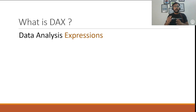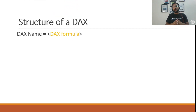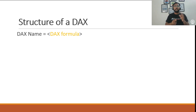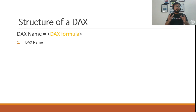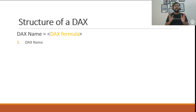Now let's take the next step ahead and understand the various components of a DAX equation. Talking about the ideal structure of a DAX equation, there are two things: on the right side we have the DAX formula and on the left side we have the DAX name. Let's understand each of these components one by one. The first component is the DAX name, which is something defined by the user himself.